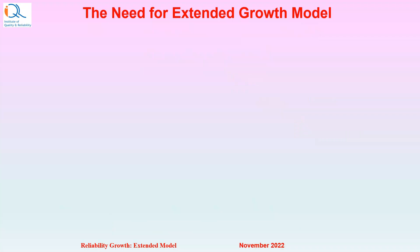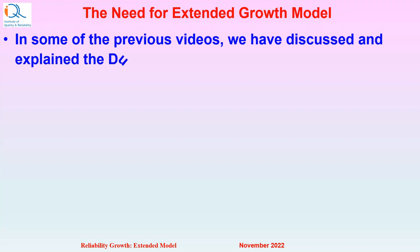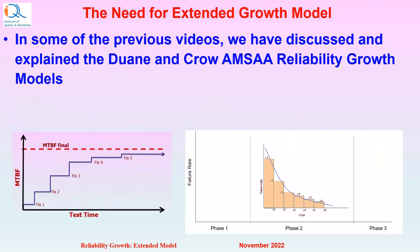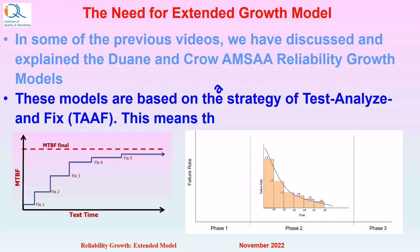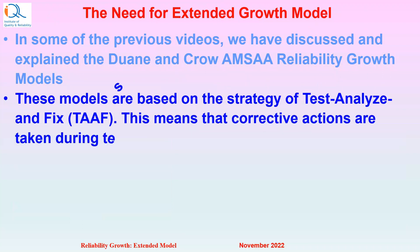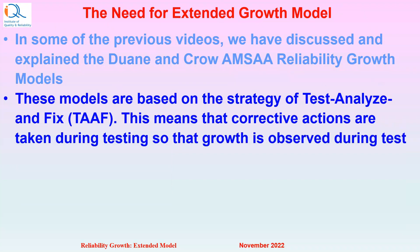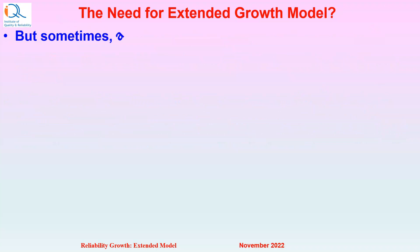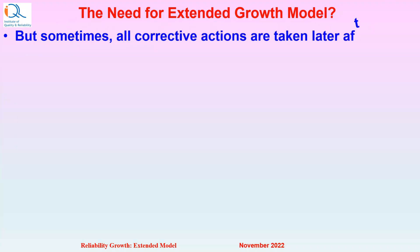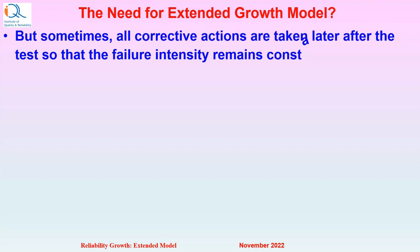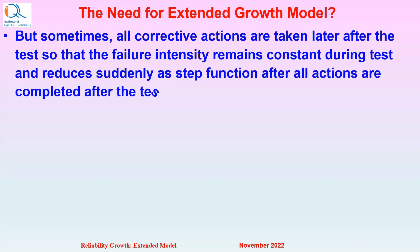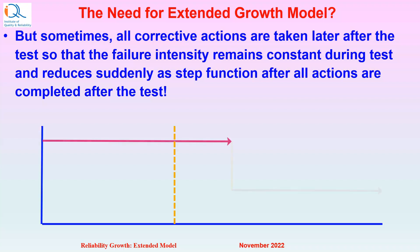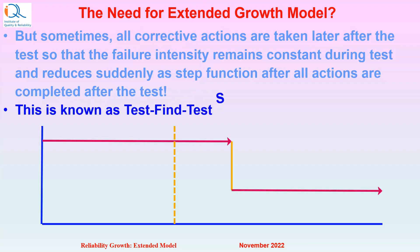Let us understand the need for the Extended Reliability Growth Model. In some previous videos, we discussed and explained the DUAN and Crow-AMSAA Reliability Growth Models. These models are based on the strategy of Test, Analyze and Fix, meaning corrective actions are taken during the test so that growth is observed during the test. But sometimes all corrective actions are taken later after the test, so that failure intensity remains constant during the test and then reduces or jumps suddenly as a step function after all actions are completed. This is known as the Test-Find-Test strategy.